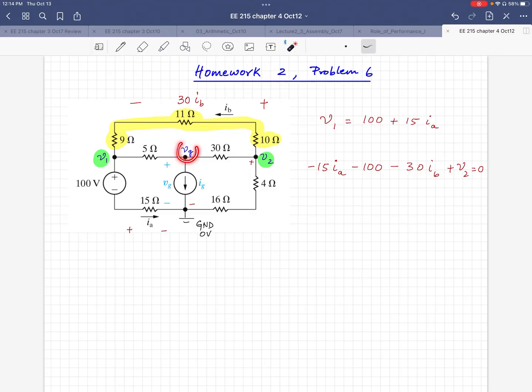Another thing that you could do, the moment you find out VG, you can also find out the current through this 5-ohm resistor. 5-ohm resistor would be V1 minus VG divided by 5 will give you some current. If you get a positive value, the current is flowing that way. If you get a negative value for that, current is flowing that way.